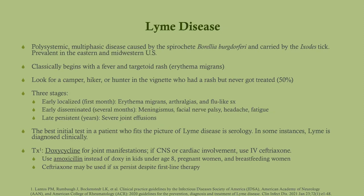Lyme disease is polysystemic and multiphasic. It's caused by the spirochete Borrelia burgdorferi, carried by the Ixodes tick, and is prevalent in specific U.S. areas — the northeast and around the Great Lakes. In a vignette, look for a camper, hiker, or hunter who got a rash and was never tested or treated. Because joint inflammation is a more distal consequence, you may not see the target rash on physical exam — that's early on. There are three stages, and you can stop progression as long as you're treated.